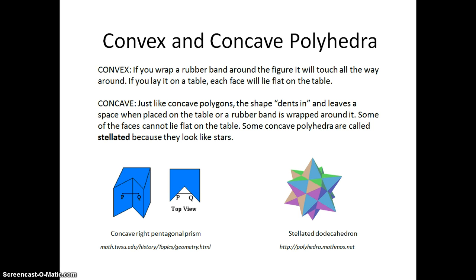Convex and concave polyhedra. For the convex polyhedra, just like the polygons, if we wrap a rubber band around it, it will touch all the way around. If we lay a convex polyhedron on the table, each of the faces will lie flat or kiss the table.